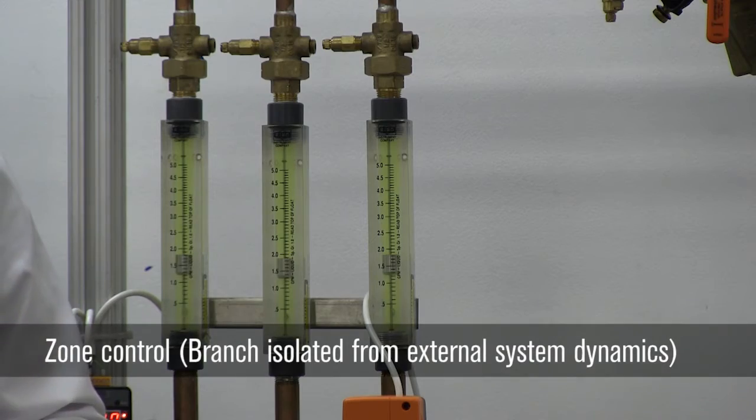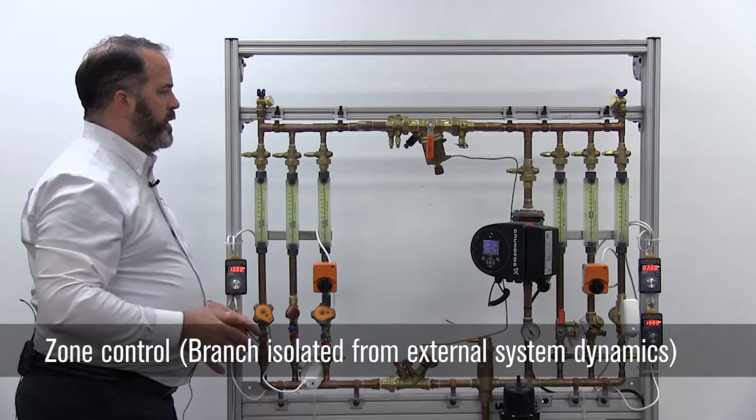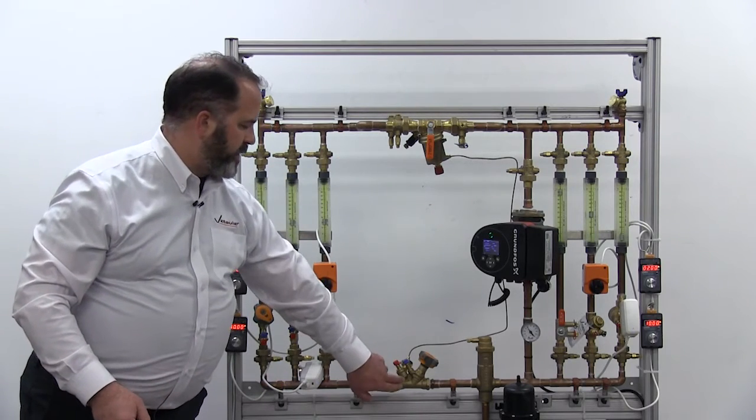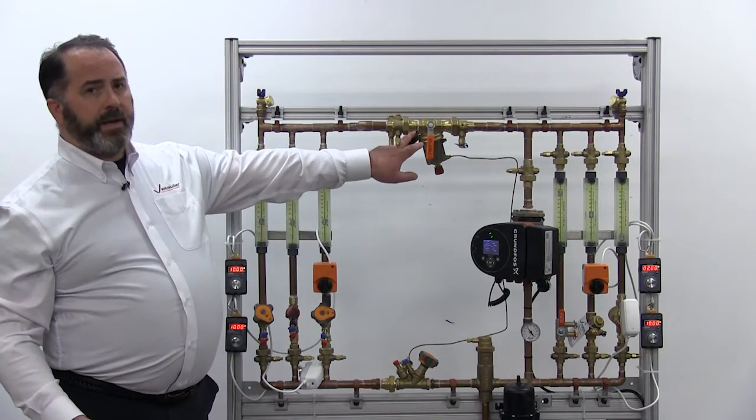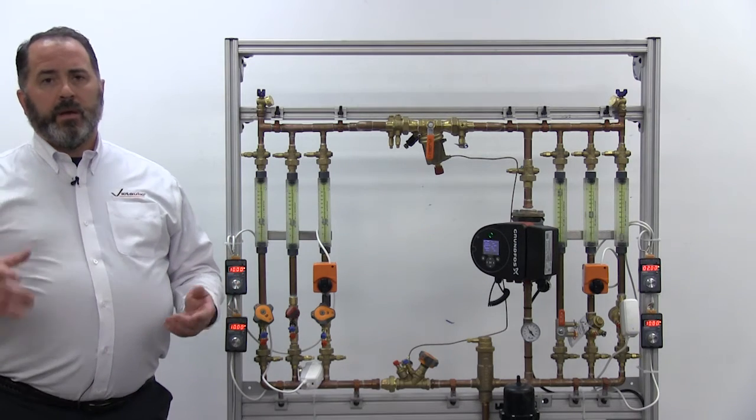So I'm activating the differential pressure controller. Now that valve is controlling the differential pressure between my supply side and my return side, and in doing so I've imparted better control to that part of the system.